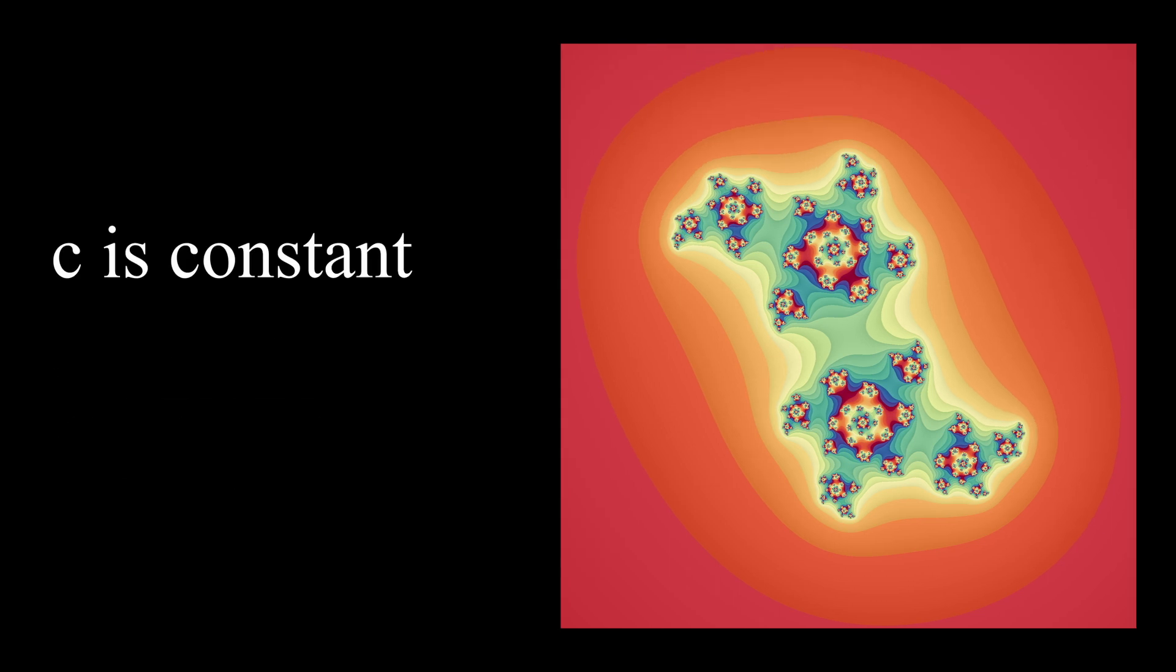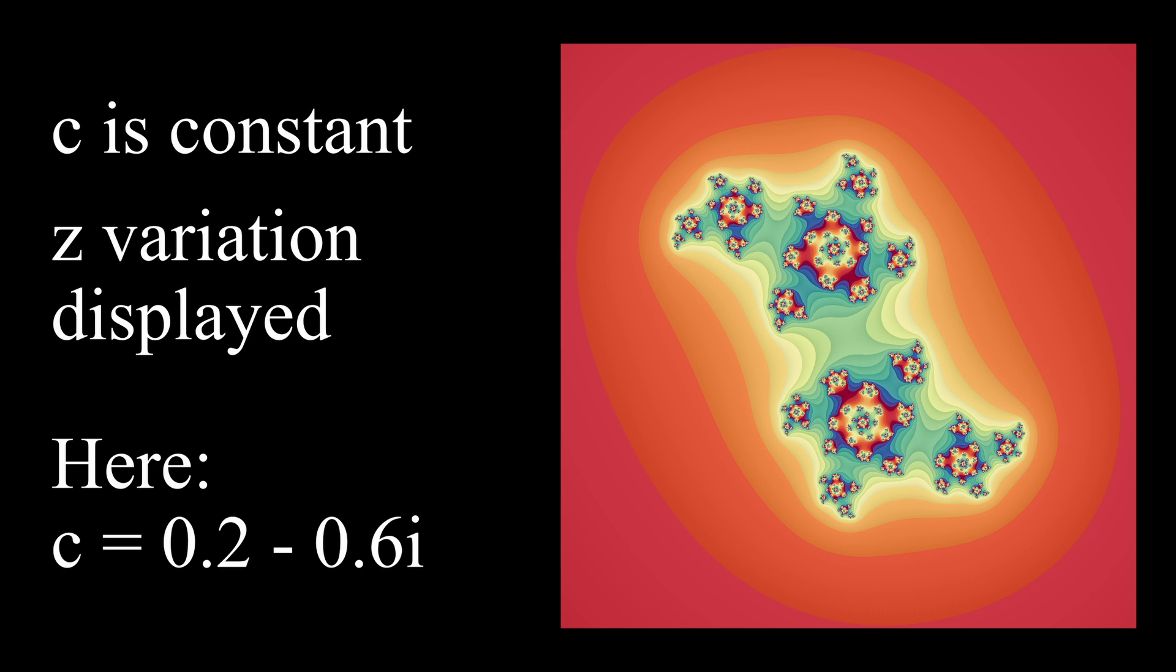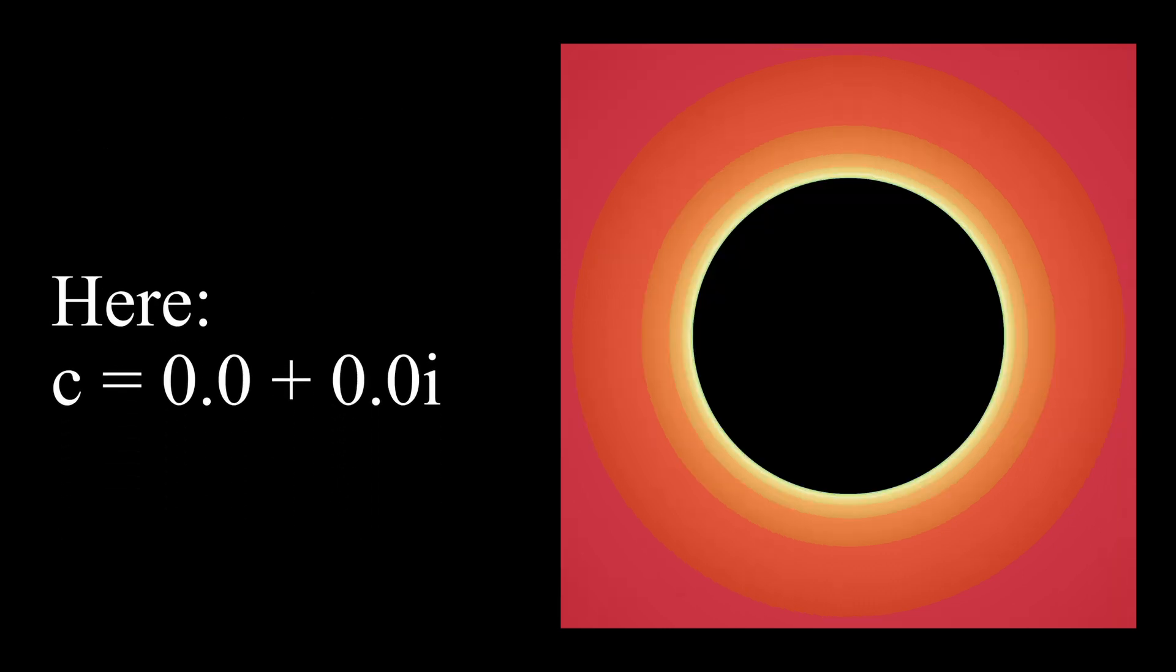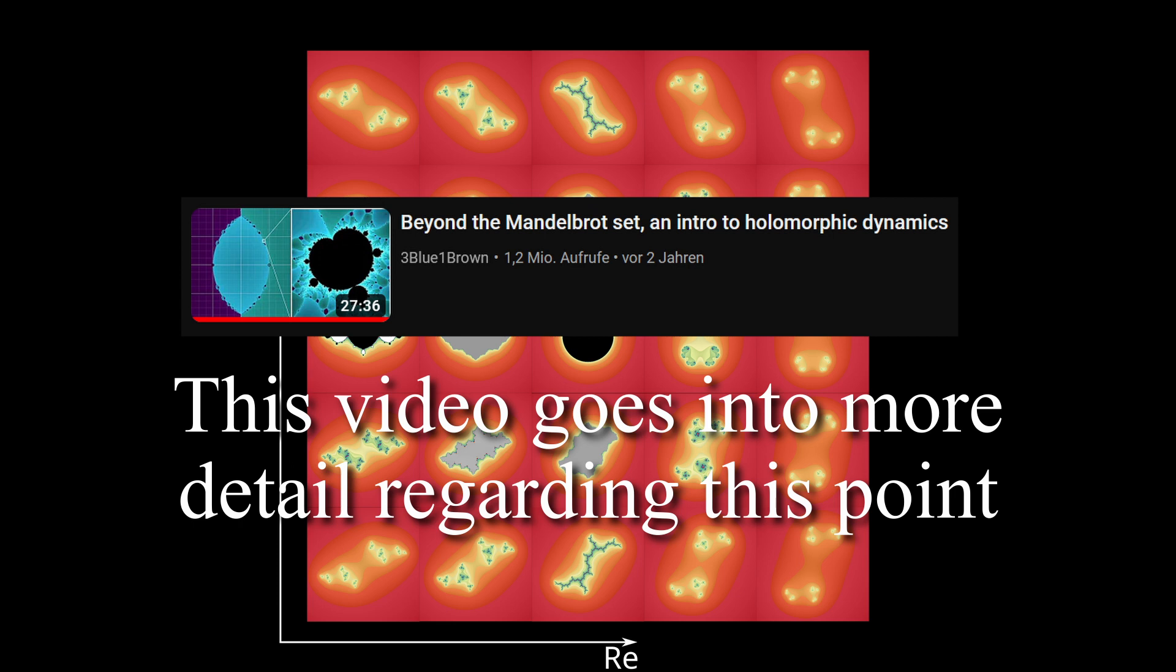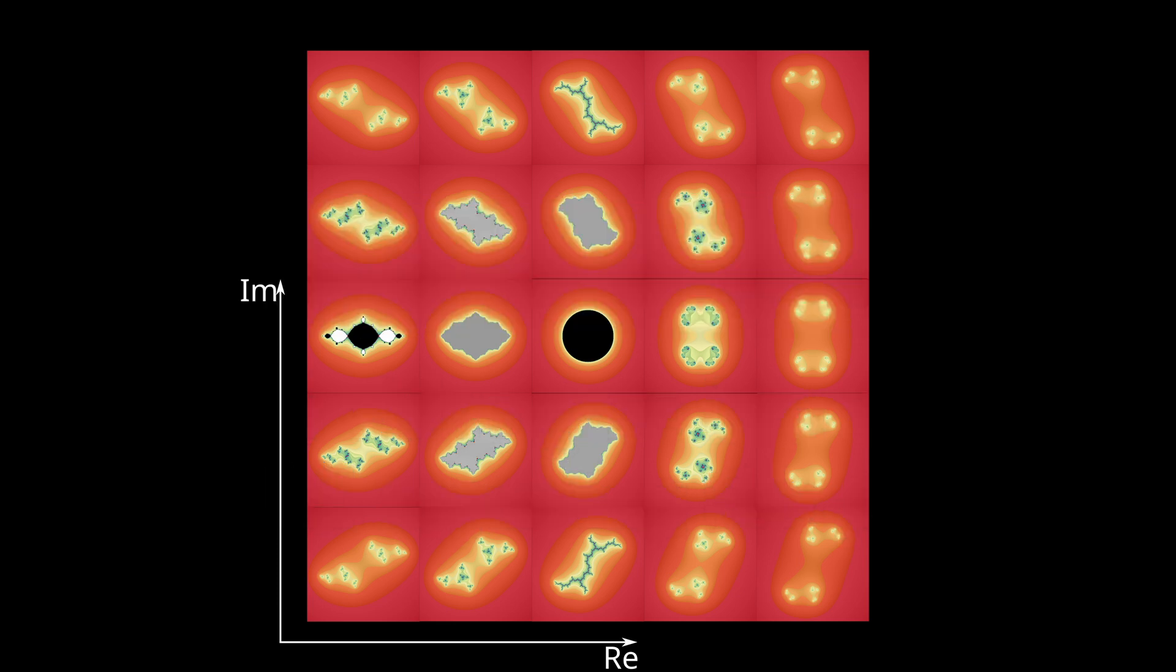But there's not just one Julia set at c equals 0. Instead, it's a family of sets with varying c terms. The one at c equals 0 is actually quite boring. We can arrange the different Julia sets by their c terms, real part on the horizontal, imaginary part on the vertical. And this also gives each point on the Mandelbrot set a related Julia set, which is neat.